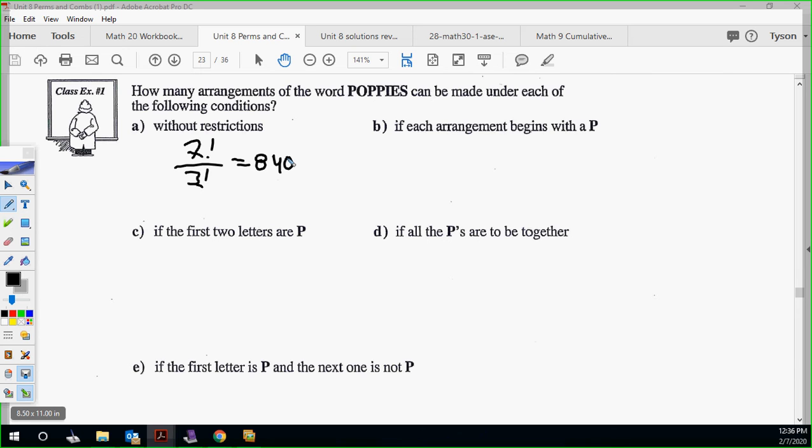If each arrangement begins with P, that just means we have a P here locked in. Now we have six spaces left. Is there repetition? Yes, so this would be 6 factorial over 2 factorial. The first P is locked in. We don't care about switching the three P's around because it's still the same thing. So then we have 360.